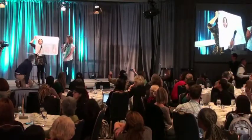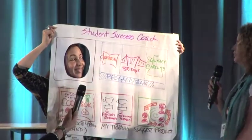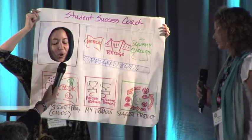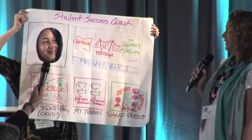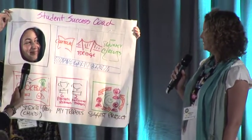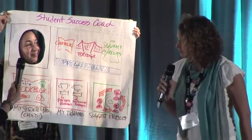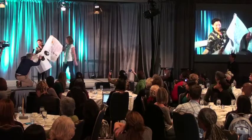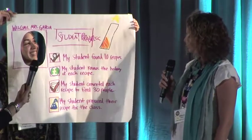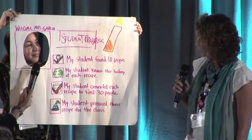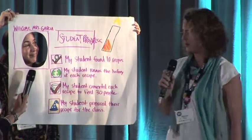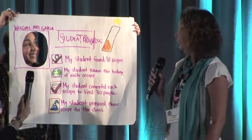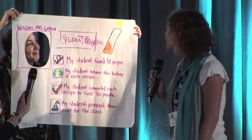I wonder what Tracy has left to do at school. Let me go into my portal and check to see what she has. Welcome back, Student Success Coach. It looks like Tracy has done two of the three. She still needs to do some work on her cookbook. She's found her recipes and she's converted them to feed 30 people, not three people. It looks like she needs to know the history of that recipe, so we'll have to talk about that after dinner tonight.